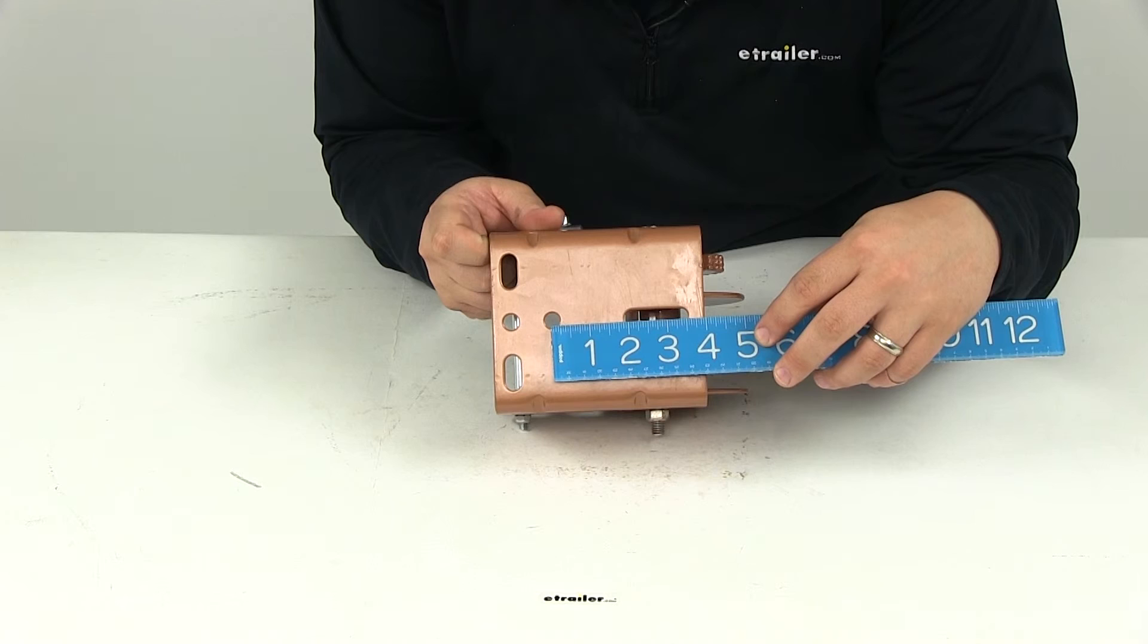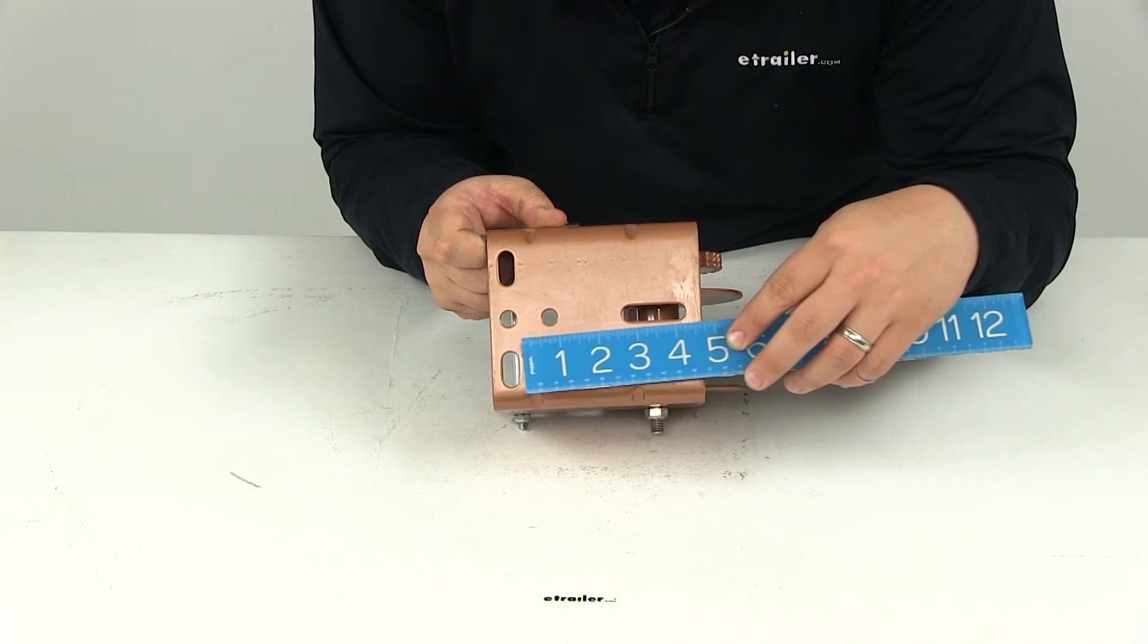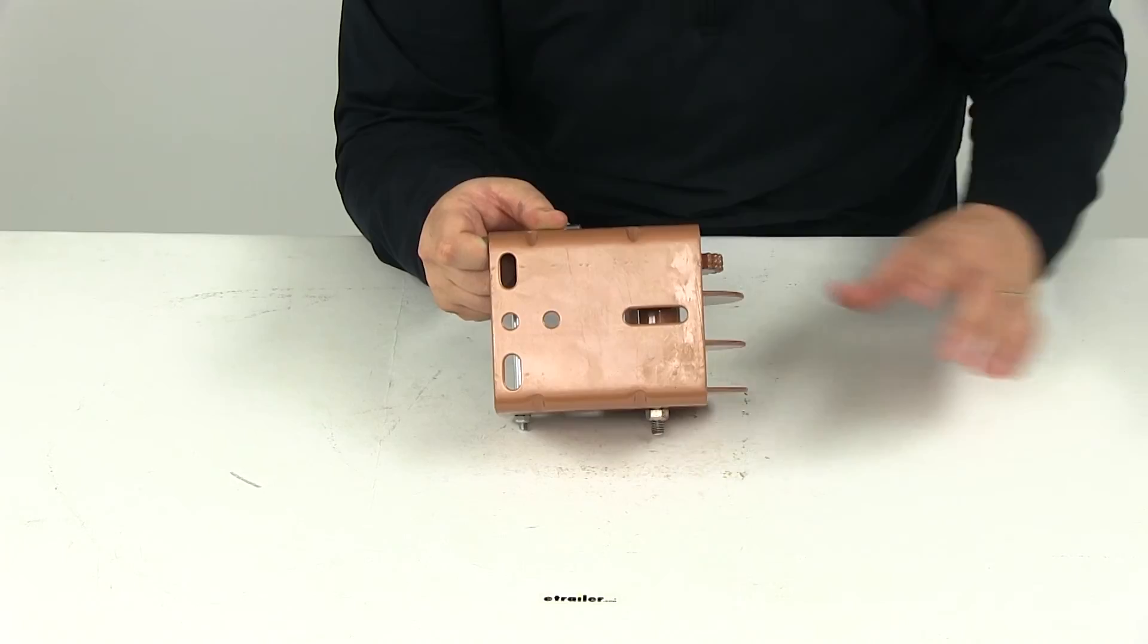These two holes are going to have a separation of looks to me about two and five-eighths of an inch and then that means that this one would be about three and five-eighths of an inch center on center.